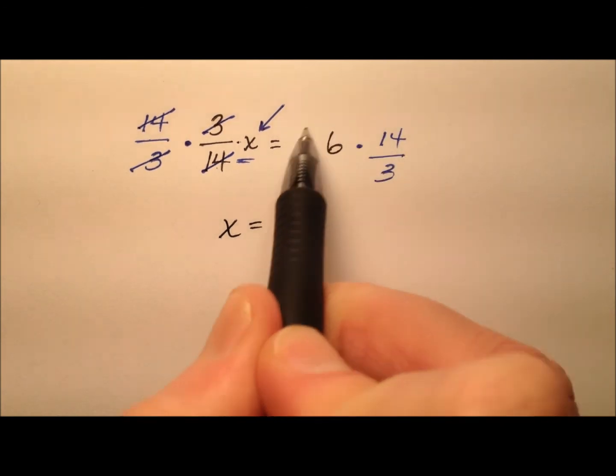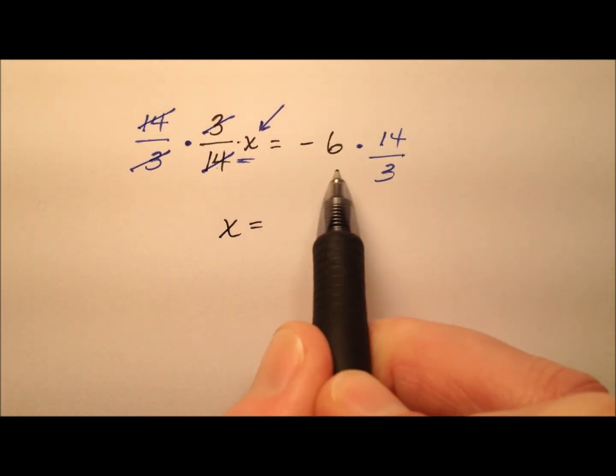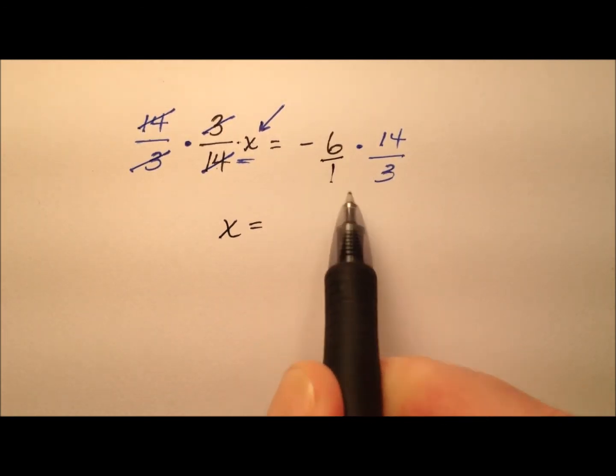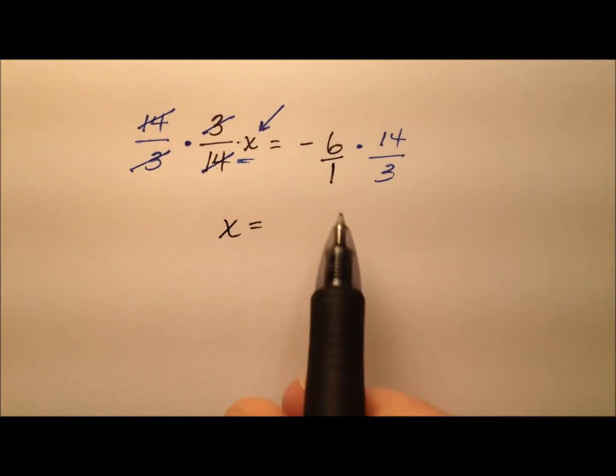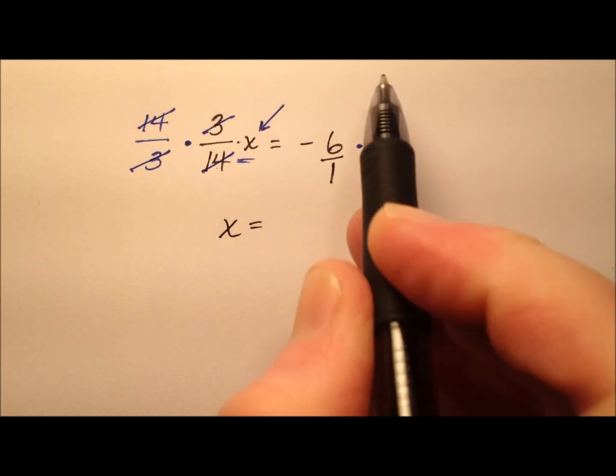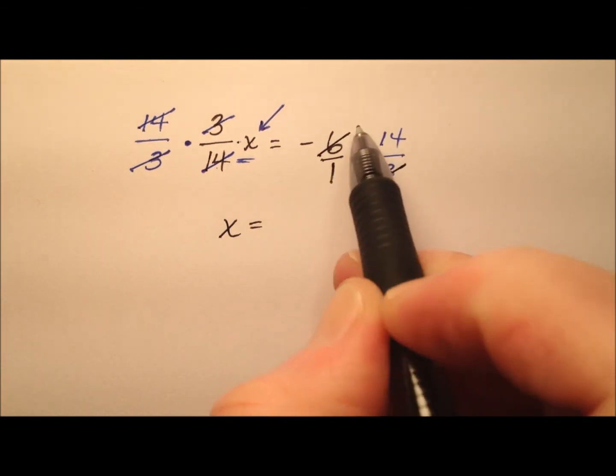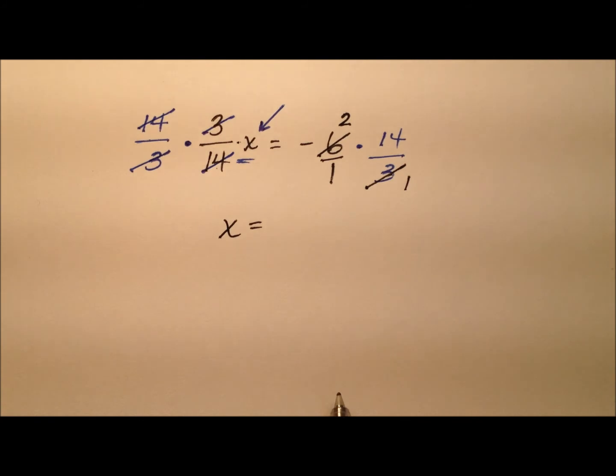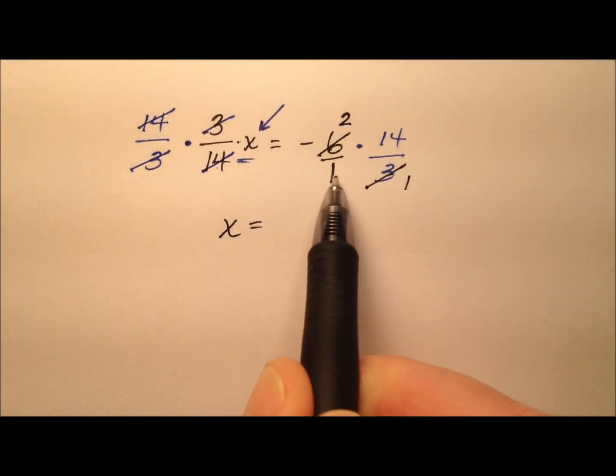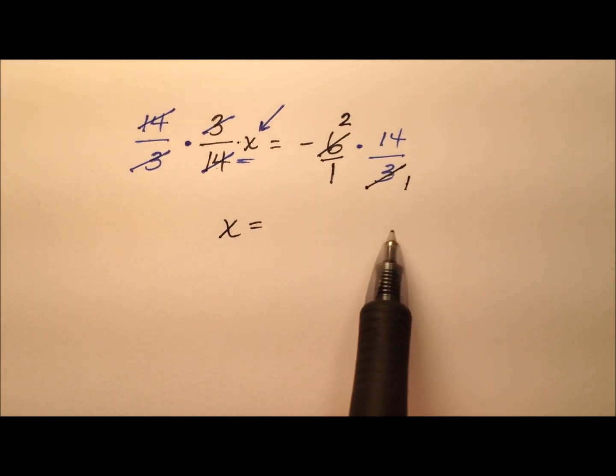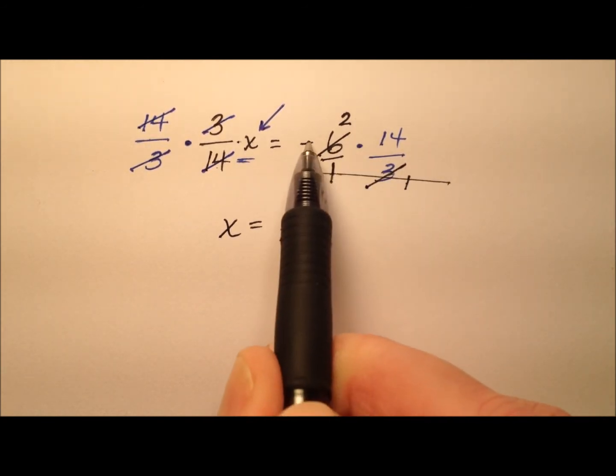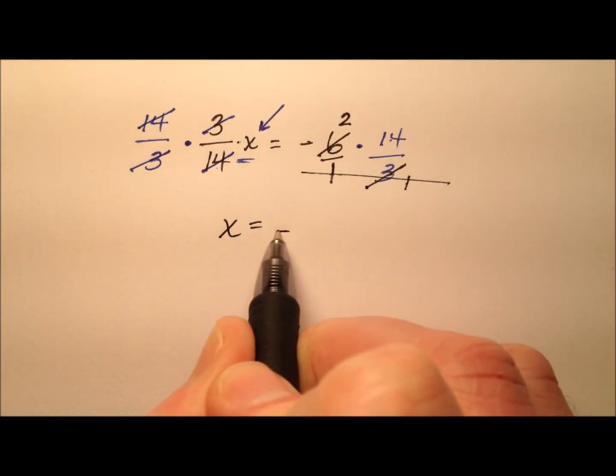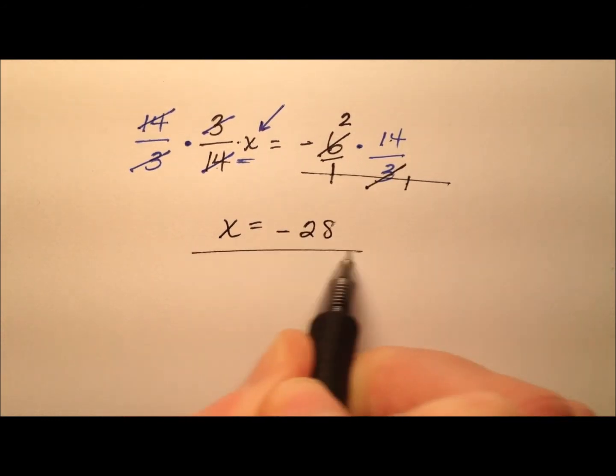and now we can go ahead and do the multiplication on the right side. So we could put this negative 6 over 1 if you like, so you can see the fraction multiplication. And the 6 and the 3, it looks like we can divide a 3 out of each and call this 2 and 1 respectively. So what it looks like in the denominator is just 1 times 1 is 1, so we're not going to write it as over 1, we'll just leave the over 1 alone. So it's negative 2 times 14, which is negative 28.